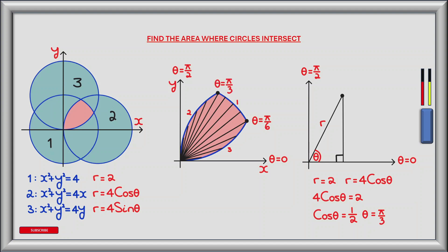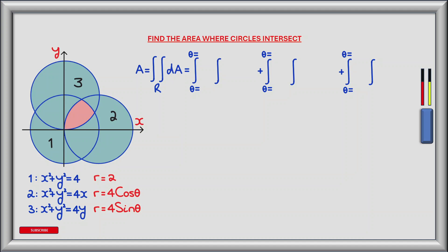We can now define the limits of integration for the outer integrals, as r rotates about theta. The region is split into three sectors, each represented by a double integral. The first sector has outer limits from theta equals 0 to theta equals pi by 6. The second sector has outer limits from theta equals pi by 6 to theta equals pi by 3. The third sector has outer limits from theta equals pi by 3 to theta equals pi by 2.